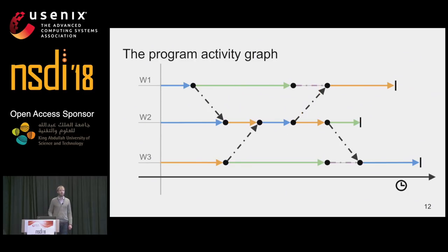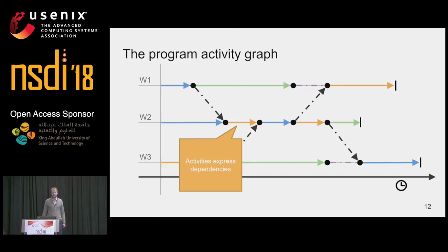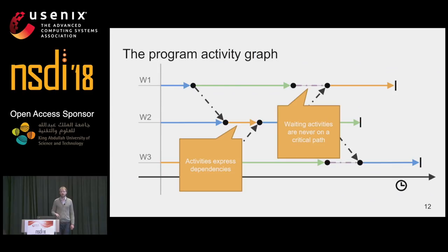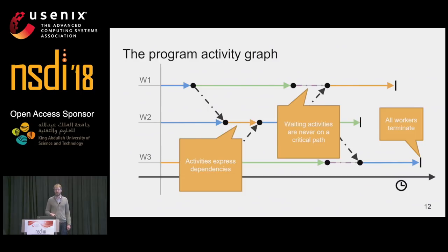I want to highlight three important facts about the program activity graph. Firstly, activities express dependency information, which is crucial when applying critical path analysis. Secondly, we have special edges which represent waiting activities — this is when a worker doesn't have any more data to process and is idling. A critical path never crosses one of those waiting activities. And thirdly, all workers eventually terminate, so this program activity graph captures a whole execution trace.